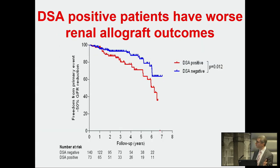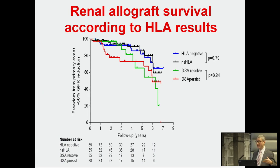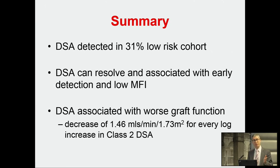We did a comparison and found that how high the MFI was at time of first detection, and how long post-transplant, was quite predictive of overall long-term outcome. Patients with donor-specific antibodies had statistically worse renal allograft outcome, with a p-value of 0.01. We showed a reduction of 1.5 mL/min/1.73m² for every log increase in class 2 donor-specific antibody. We're not going to get that natural history data now because many people change the immunosuppression.